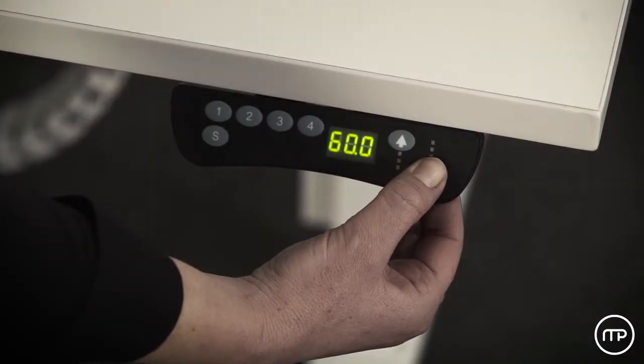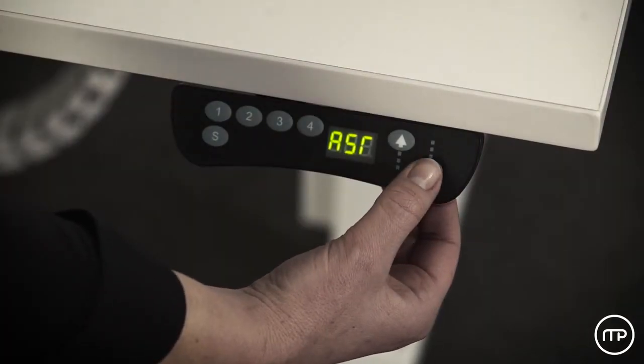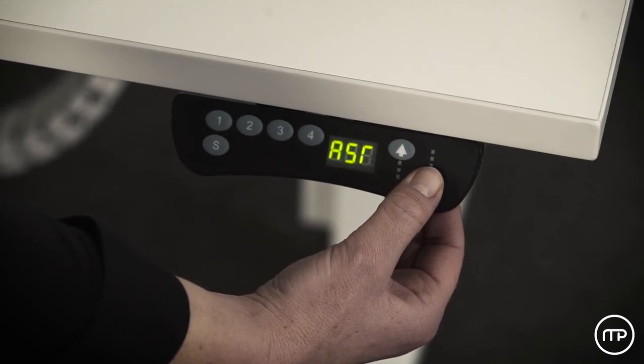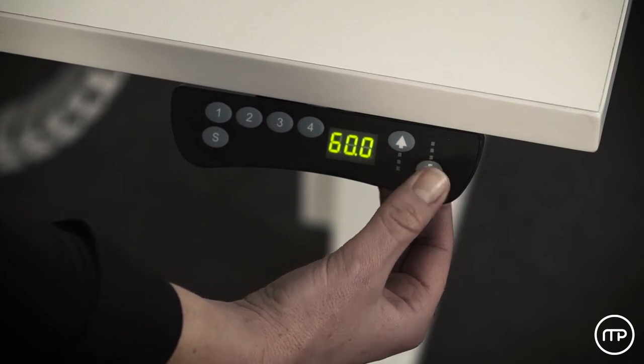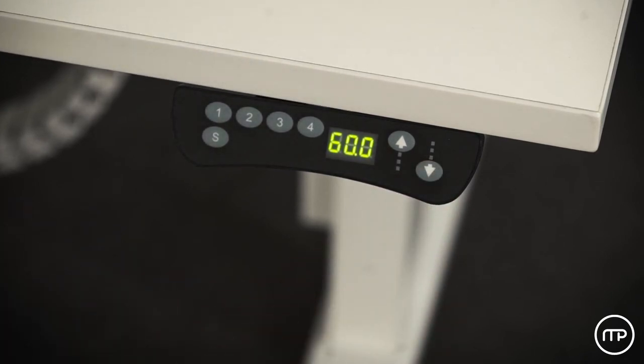After approximately 10 seconds, the handset will display the letters A, S, R. Now press and hold the down arrow one more time. The workstation will lower slightly further past the lowest point and raise back up. The display should now read 6-0 again. The workstation is now reset.